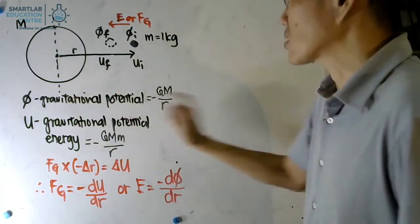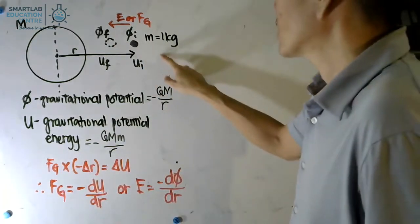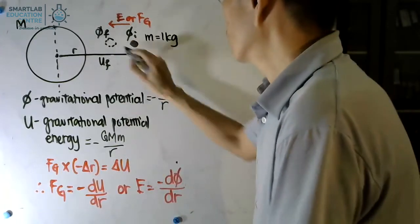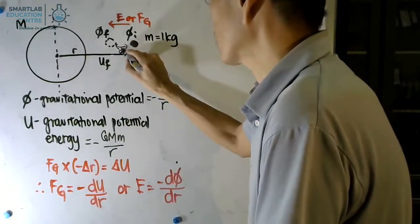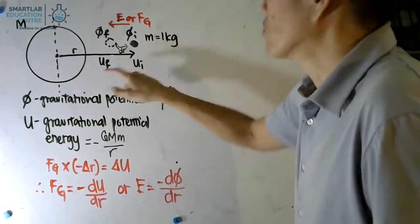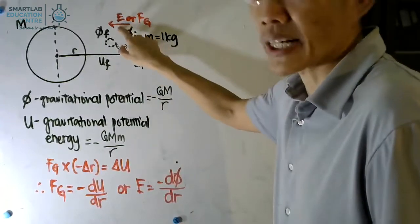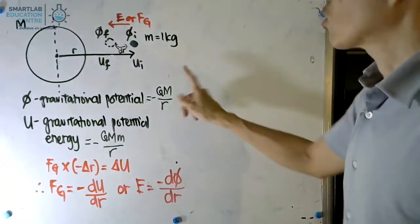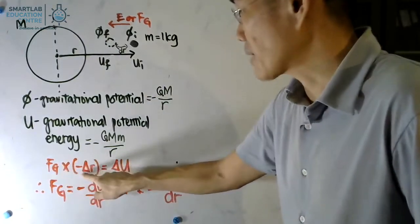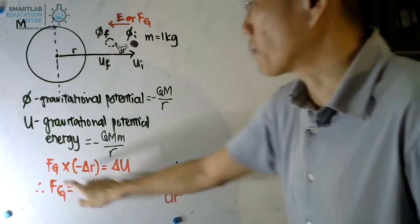Let's now take a look at how gravitational potential relates to the gravitational field strength. We can assume that a mass of m equal to 1 kg moves over a very small distance of delta R as a consequence of the gravitational attraction force. The work done by the system will be Fg multiplied by negative delta R because the direction of delta R is opposite to that of Fg.